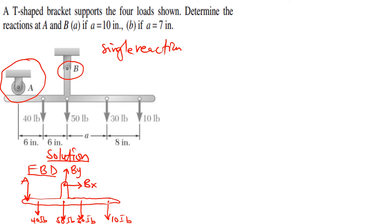We have the measurements given. This distance is 6 inches, the next distance is also 6 inches, then we have distance 'a', and the distance here is also 8 inches. This represents our free body diagram, from which we can do the analysis to find the reactions.